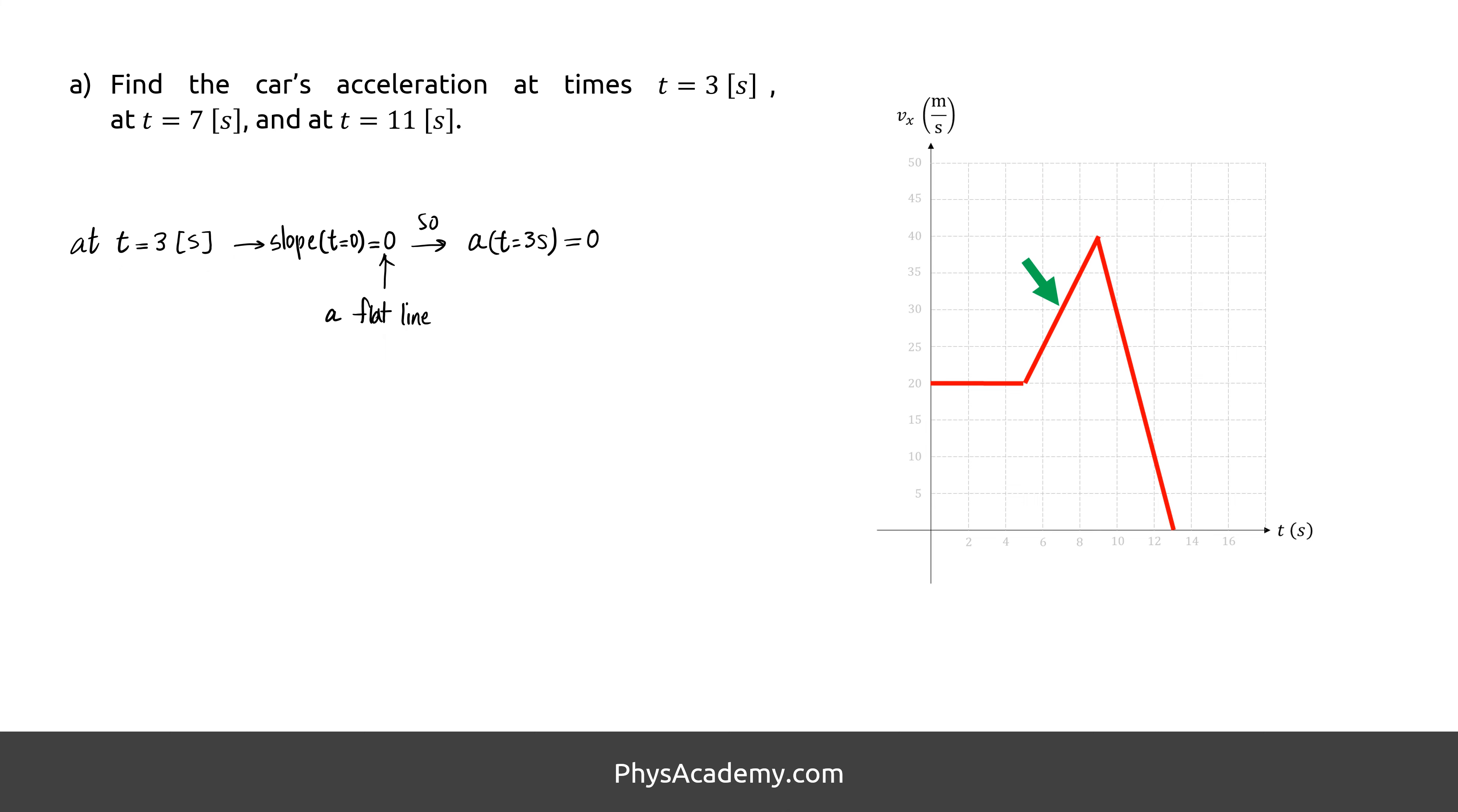At 7 seconds, the slope is upward, therefore a positive value. To find its exact value, we divide the change in velocity by time. This section of the plot goes from 20 meters per second to 40 meters per second between 5 to 9 seconds. After plugging the numbers in, we get positive 5 meters per second squared for the acceleration of this part.